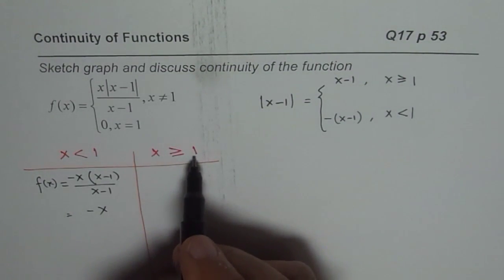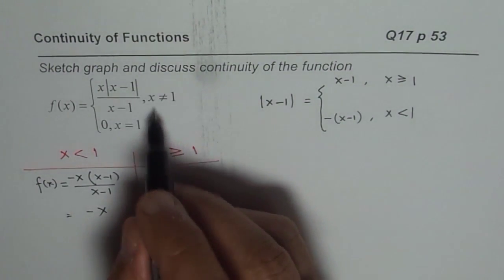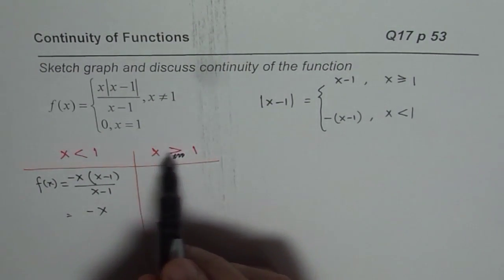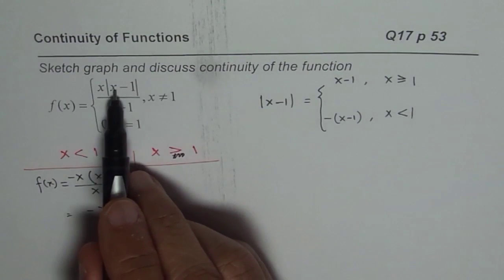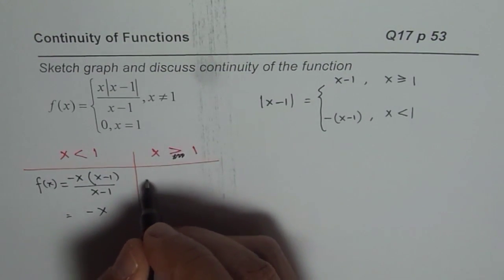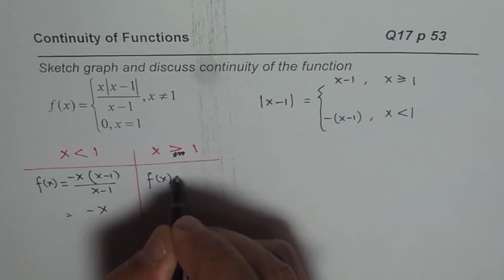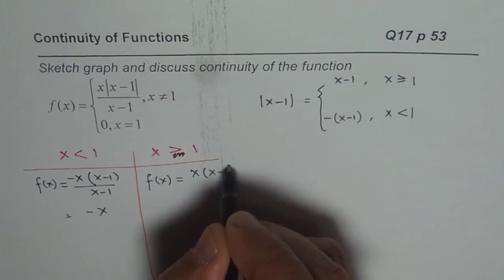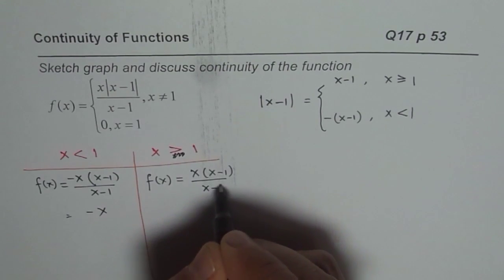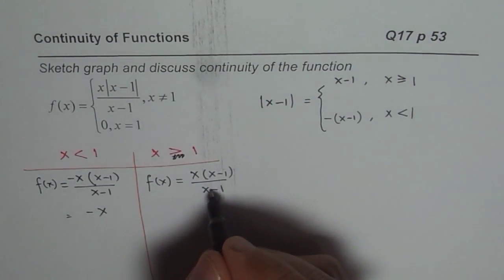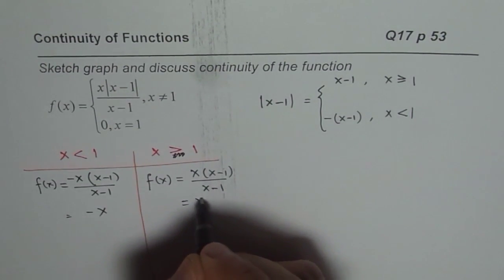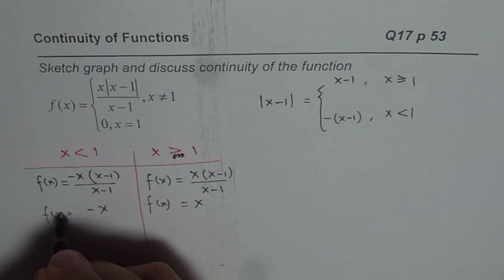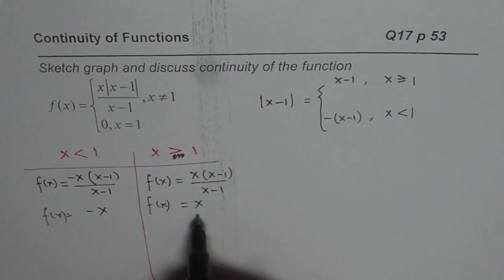Now for greater than or equal to 1, let us consider just greater than, since it is not equal to 1. So we'll consider only greater than. So when x is greater than 1, then absolute function could be written as (x-1). So in this case, I have f(x) equals x times (x-1) divided by (x-1). Now (x-1), (x-1) cancel and we get f(x) equals x. So let me rewrite f(x) also. In this interval, it is x.